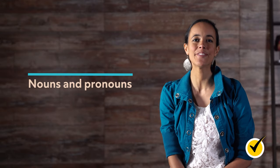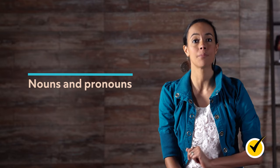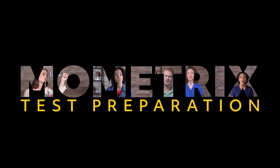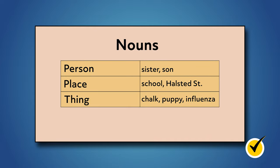One of the basic elements that make up the structure of sentences is a noun. There are different types of nouns, but they all have the same general function. Today, we're going to discuss different types of nouns as well as pronouns, what they do, and how to use them properly. Nouns are words that name a person, place, or thing. For example, dad, son, jet fighter, influenza, chalk, Halstead Street, and puppy are all nouns.